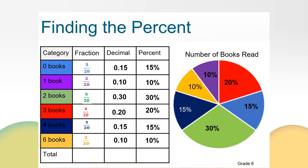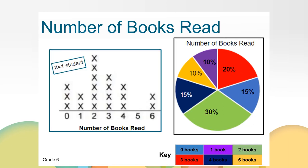Ms. Hogan surveyed her class on the number of books read. We represented this data using a line plot and a circle graph — both graphs show the same data. Mathematicians often consider which type of graph makes the most sense for the data they want to represent. Line plots are useful for showing numerical data because you can see each data point and count the total. Circle graphs are useful for showing categorical data because you can see the relationship each category has to the whole. Which graph works better for you and why?